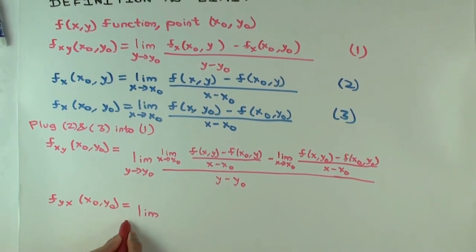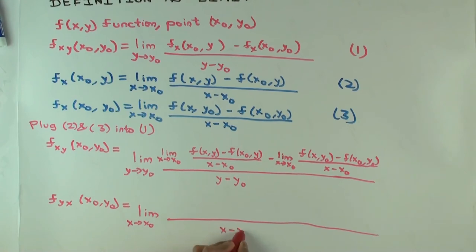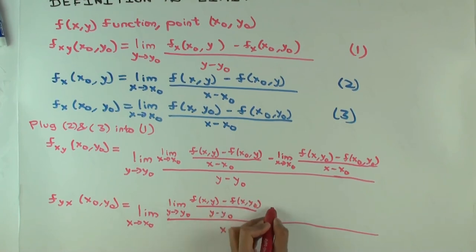What should it be here? X approaches x0. X minus x0. What will come here? Y approaches y0. Is this all captured?